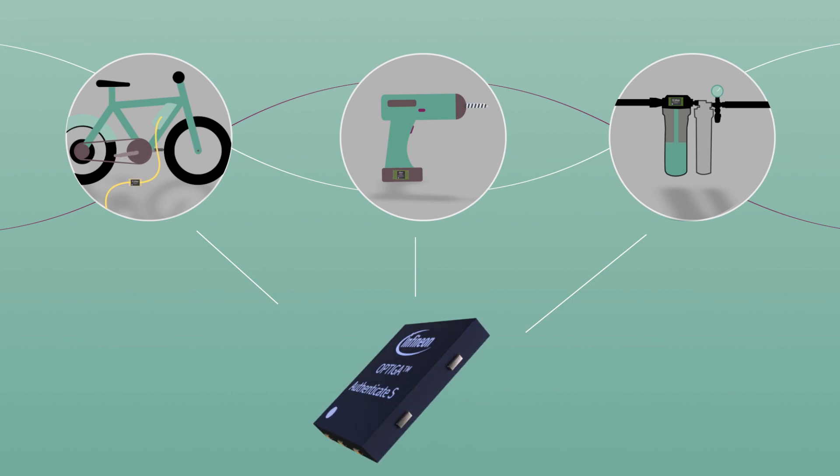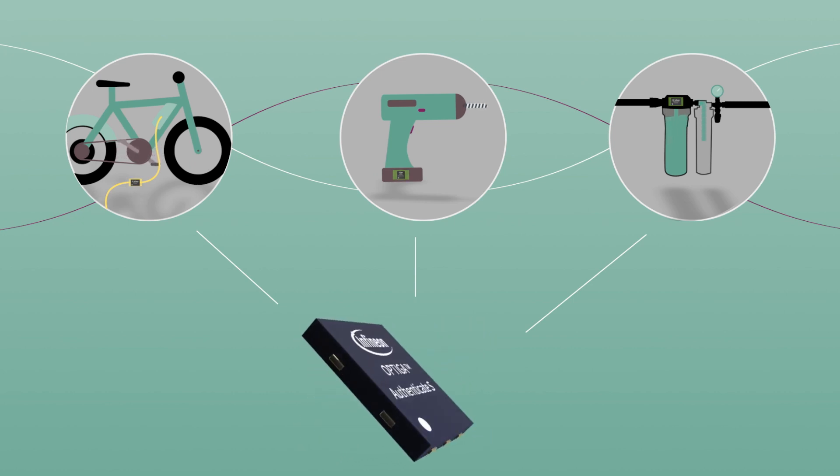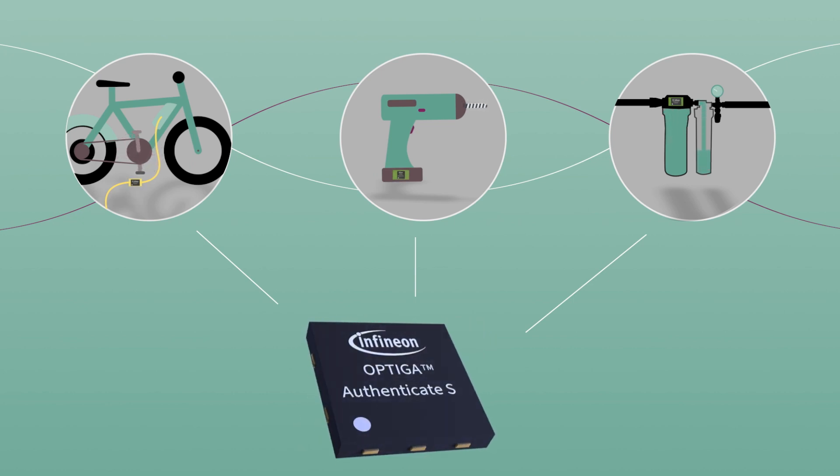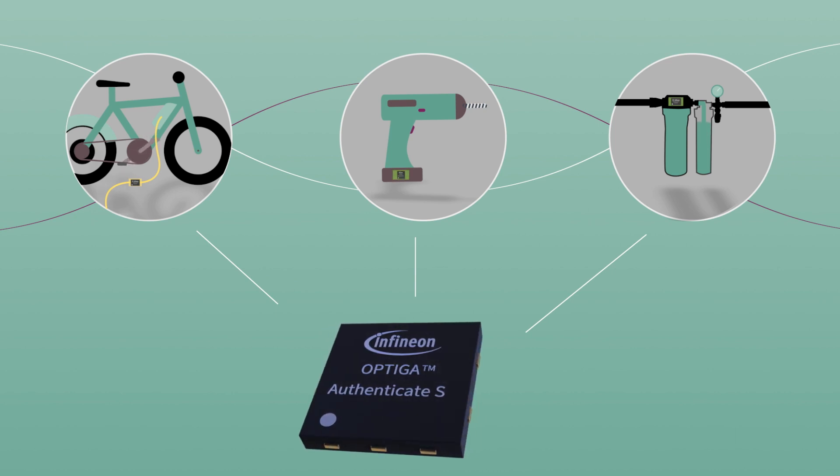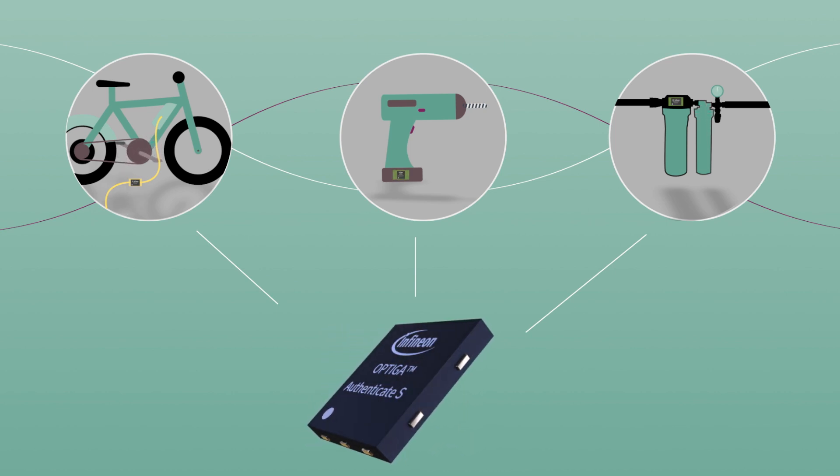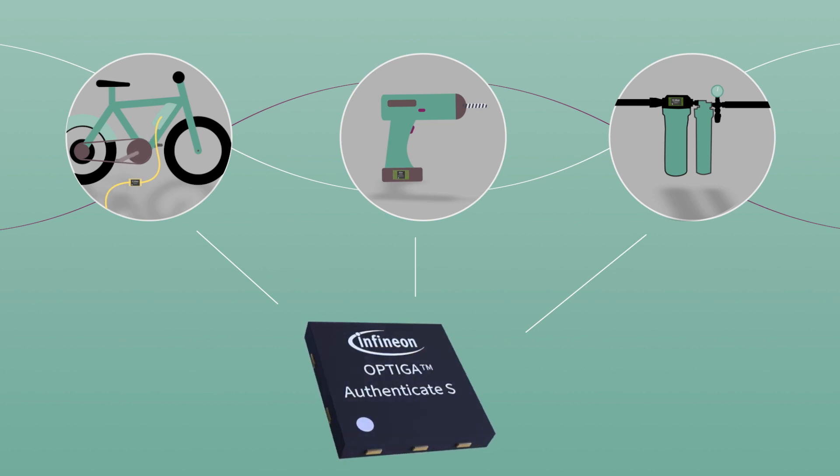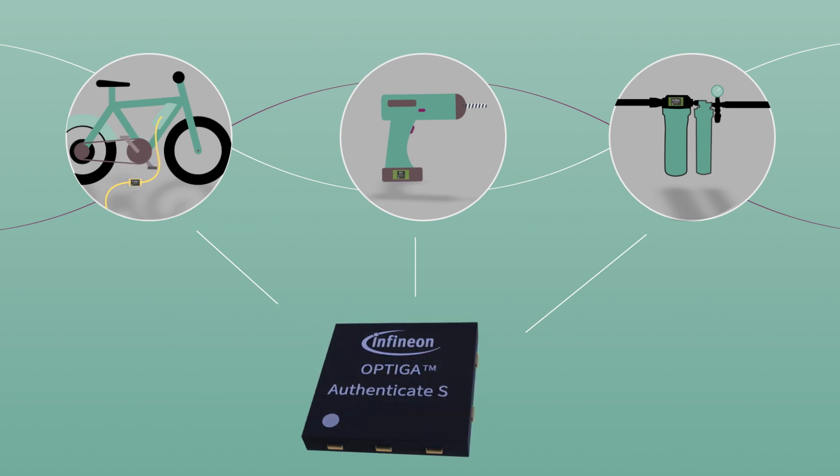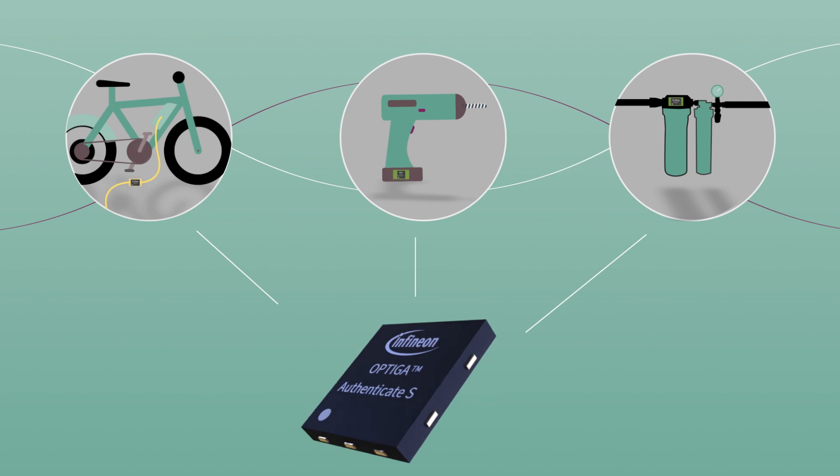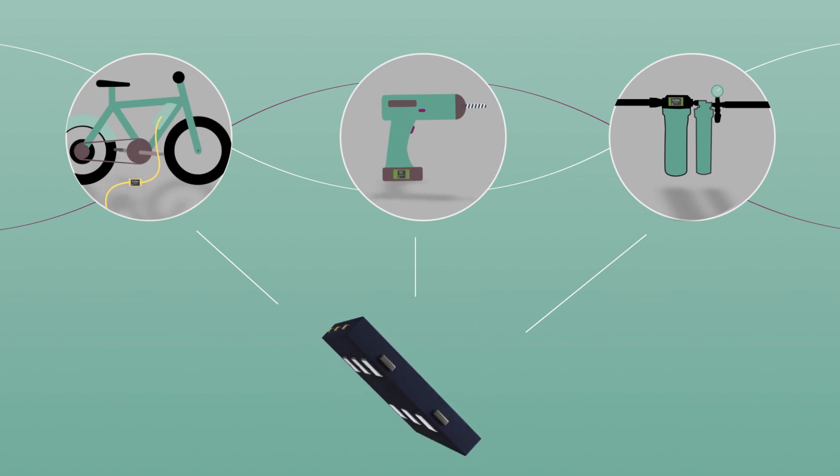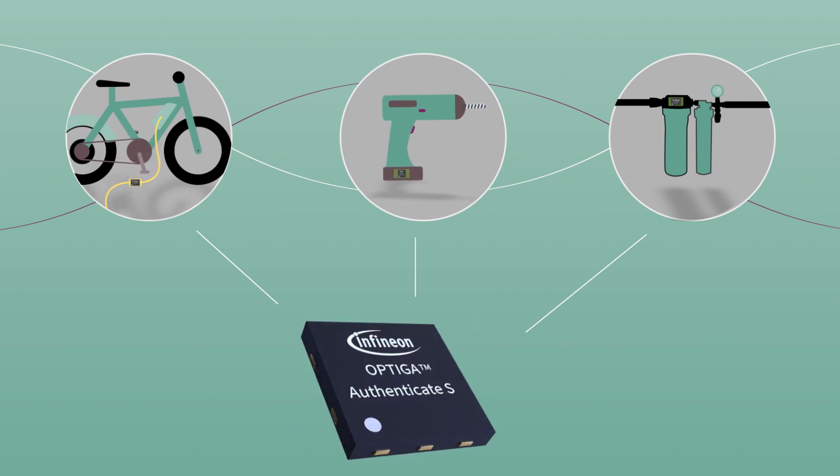All products and accessories equipped with Optiga Authenticate S are thus protected and able to prove they are genuine with their unique ID. This highly flexible solution supports one-way and mutual authentication, also enabling host authentication including host binding. In addition, it offers host support for many lower performance microcontrollers.